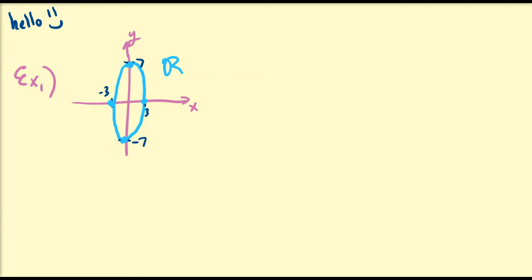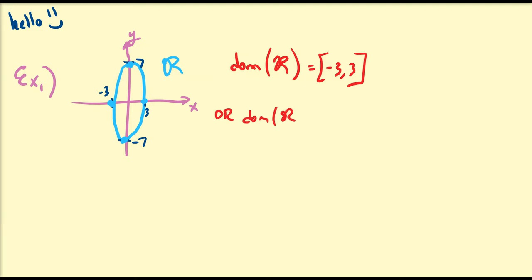Clearly it's not a function of x, nor a function of y — that can be easily proven via the vertical and horizontal line test respectively. But we can see from this graph that the domain of this relation is going to be all real numbers from negative three to three. We can write the domain of r as the set of all x such that negative three is less than or equal to x is less than or equal to three.